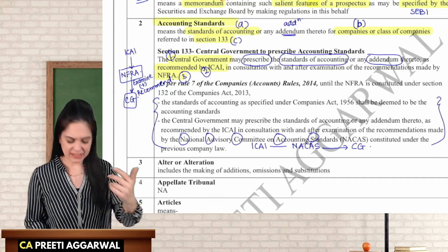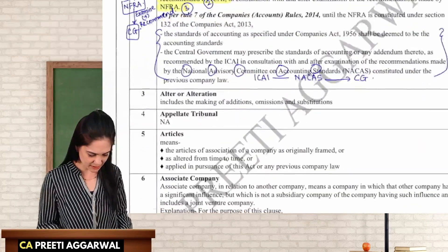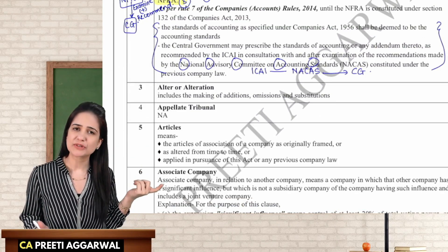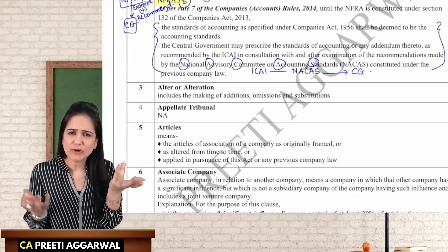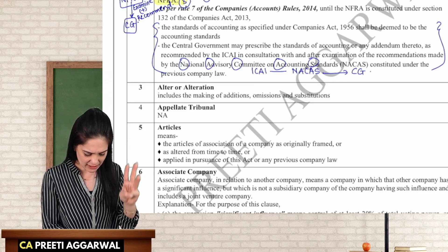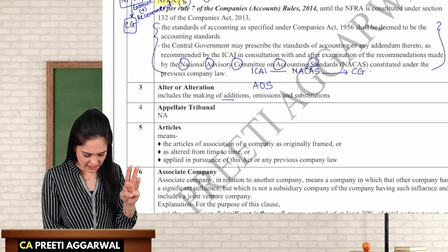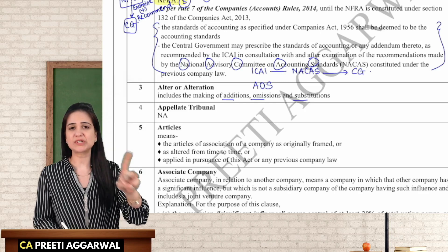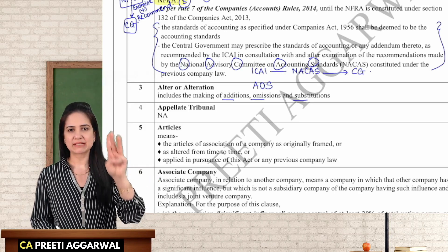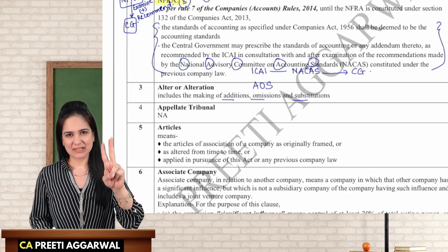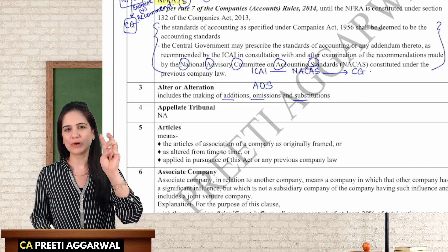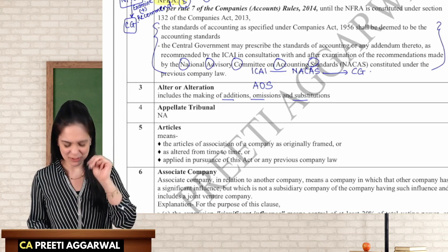Clause 3 defines alter or alteration. Like alteration of memorandum or articles — what exactly is meant by alteration? The mnemonic is A-O-S: A is addition, O is omission, S is substitution (which means replacement). So alteration includes addition, omission, or substitution.